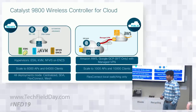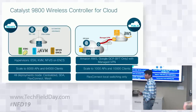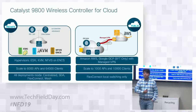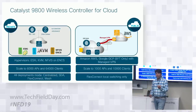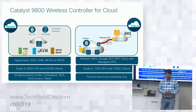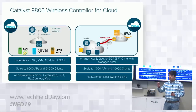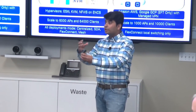Multi-tenancy is in the roadmap. Today, you can achieve it using a site tag concept — similar to AP groups on AirOS — with a more modular configuration. Similar to MQC QoS-based configuration, you configure site tags, policy tags, map them to access points, and achieve multi-tenancy.